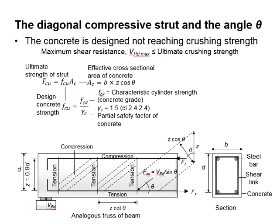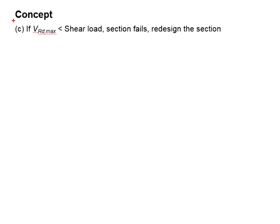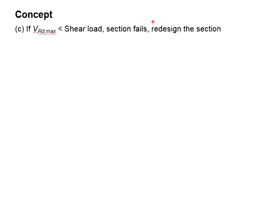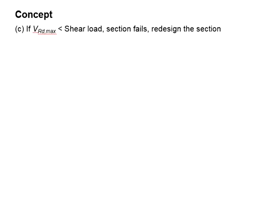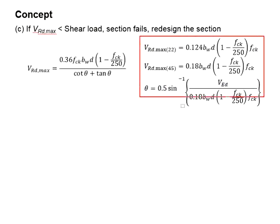If VRD Max is exceeded, even though you have shear reinforcement, the structure will fail — and this kind of failure will be due to the crushing of these strut regions, making it a brittle failure. Therefore, when your VRD Max is less than the shear load, the section will fail in a brittle manner and you will have to redesign or provide another section. You would expect the member to fail even if you provide sufficient shear reinforcement.